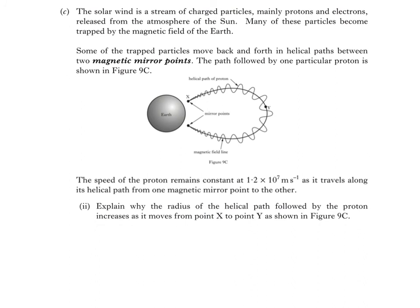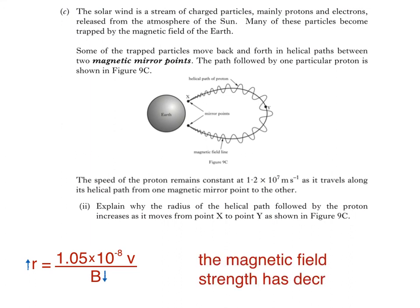Next up, we have C part 2. Explain why the radius of the helical path followed by the proton increases as it moves from point X to point Y, as shown in figure 9C. Here we can refer to the equation we saw earlier. We're told that the radius of the helical path increases and we know that the speed of the proton remains constant, so the top line of the equation must be constant. It follows then that the magnetic field strength or magnetic induction must have decreased. This should be no surprise since the distance from Earth is increasing.